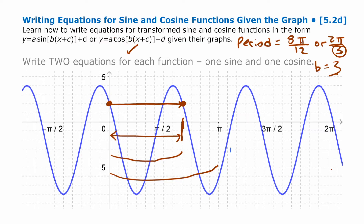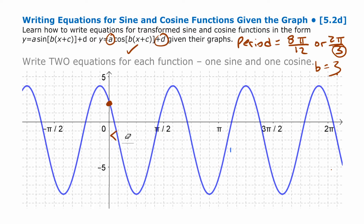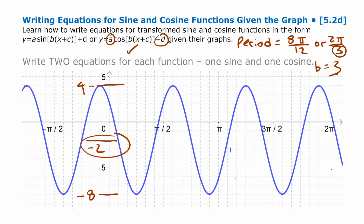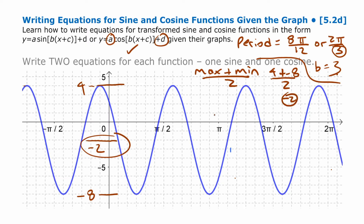Now we'll work out the two vertical things, which are probably a little easier. For the two vertical things, we need to look at the max and the min and work out the middle. Our maximum is four and our minimum is negative eight. The middle is going to be negative two. To find the midpoint of any two numbers, take the average: max plus min divided by two. So four plus negative eight divided by two is negative four over two, which is negative two. That's our d value, our vertical displacement.